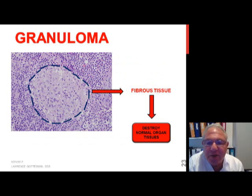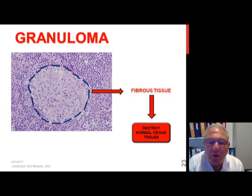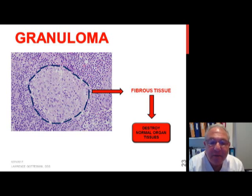Granulomas have an inherent ability to produce fibrous tissue. With the expansion of that fibrous tissue, it displaces normal tissues and can destroy organ structures. If severe enough — for example in fibrosis of the lung — it can even lead to death.